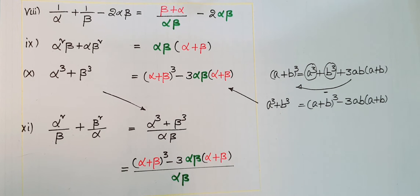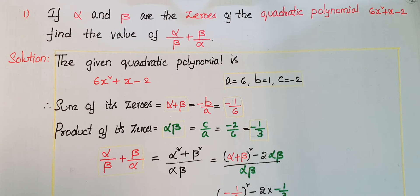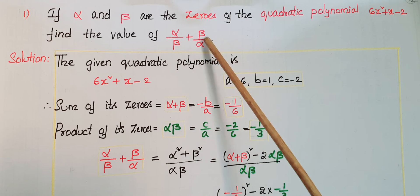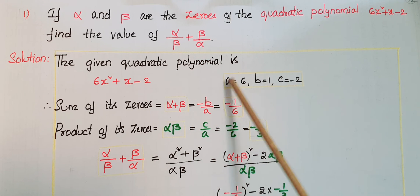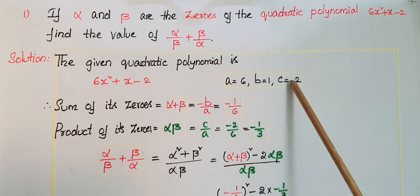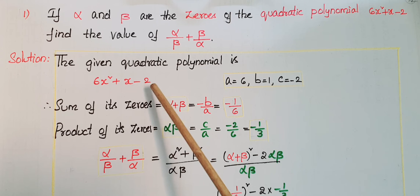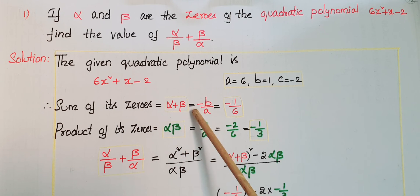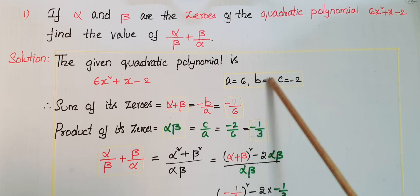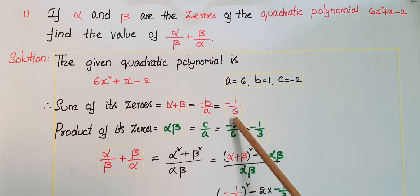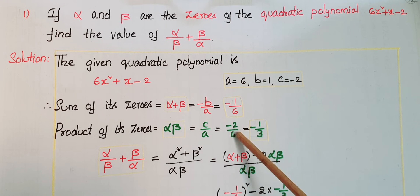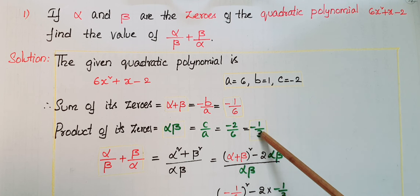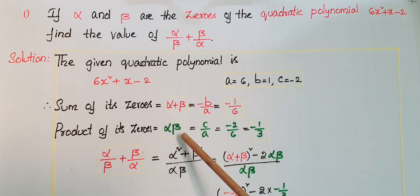First example: if alpha and beta are the zeros of 6x² plus x minus 2, find the value of α/β plus β/α. Here a equals 6, b equals 1, c equals minus 2. Sum of zeros: alpha plus beta equals minus b/a equals minus 1/6. Product of zeros: alpha·beta equals c/a equals minus 2/6 equals minus 1/3.